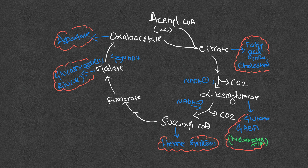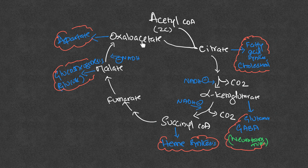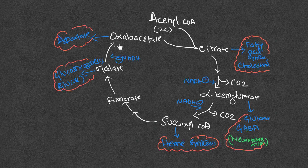Now, what happens when a TCA cycle intermediate is removed from the cycle? For example, if all the oxaloacetate is diverted to aspartate formation, there's a gap — there's insufficient oxaloacetate to combine with acetyl-CoA to make citrate, and the TCA cycle cannot continue. So there must be reactions that can fill this gap, replenishing oxaloacetate, succinyl-CoA, alpha-ketoglutarate, and other intermediates as needed.